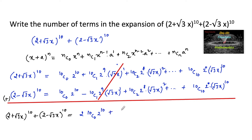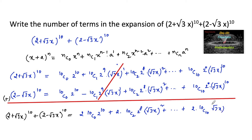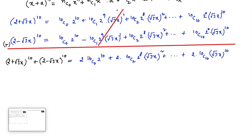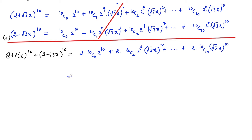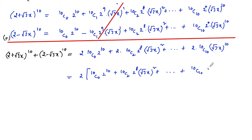So we get 2 times [10C0·2^10 + 10C2·2^8·(√3x)^2 + ... + 10C10·(√3x)^10]. We take 2 common and write: 10C0·2^10 + 10C2·2^8·(√3x)^2 and so on up to 10C10·(√3x)^10.